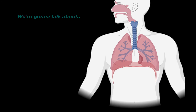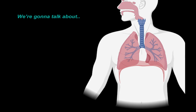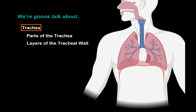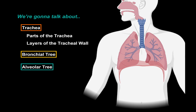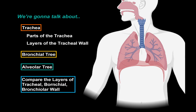In this video, we're going to cover the anatomy of the Trachea, which includes the parts that make up the Trachea and the layers of the Tracheal wall. After that, we're going to cover the Bronchial tree and the Alveolar tree. And then we're going to compare the layers of the Tracheal, Bronchial, and Bronchiolar wall to really understand the anatomical differences of structures as you get closer to the lungs.